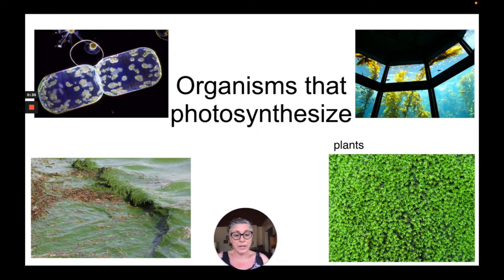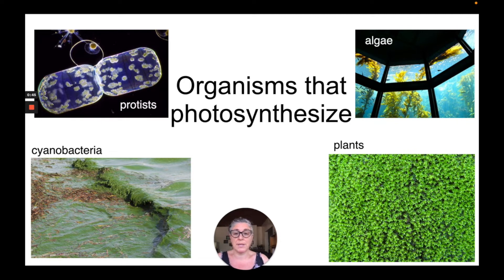So first of all, let's take a look at some examples of organisms that actually do photosynthesis. We have things like different protists, usually protists that are one cell in size. We have things like cyanobacteria pictured here. We have things like algae, and then of course plants, being the main organism that we know to photosynthesize. But these are just some other types of organisms from other kingdoms that also do photosynthesis.